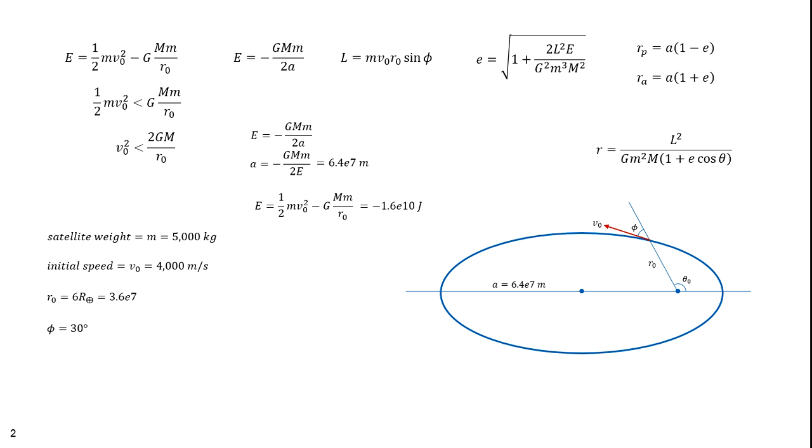With E, we can compute A, the semi-major axis. It's 6.4 times 10 to the 7th meters. Here's the equation for angular momentum. If you plug in those values, you get 3.6 times 10 to the 14th kilograms meters squared per second.